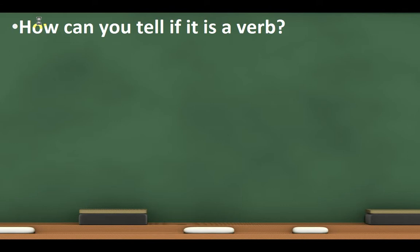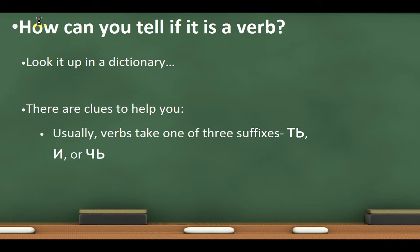So how can you tell if a word is a verb or not? The easiest way, of course, is to look it up in a dictionary. If you're just starting out in Russian, this is really the best way to do it. However, there are some clues: if a word ends in T and a soft sign, E or CH and a soft sign, then it's a verb. Or if it ends in past tense endings, or if it has another verb in front of it, then it might be a verb.